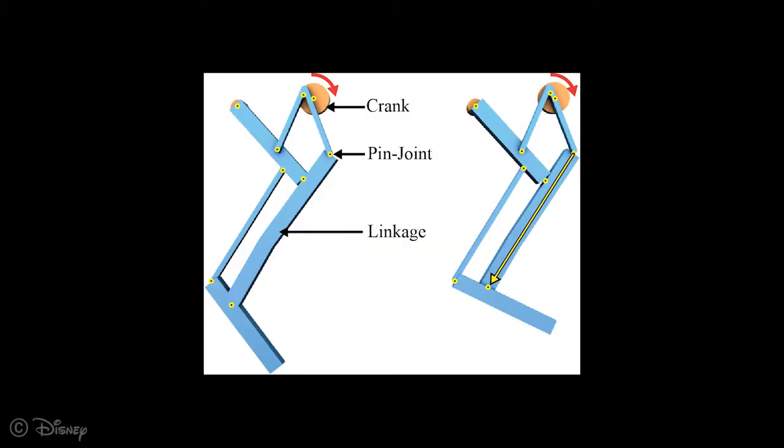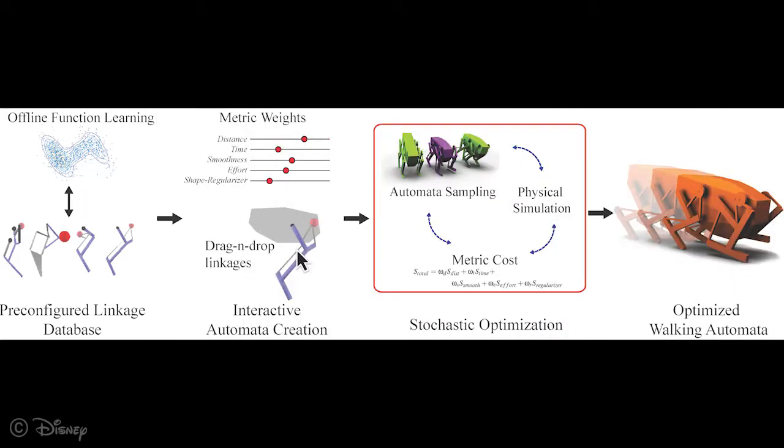The parameters we optimize are the limb linkage configurations. To speed up optimization and lead to more successful designs, we learn offline a database of likely successful linkage configurations which can be applied to all designs.